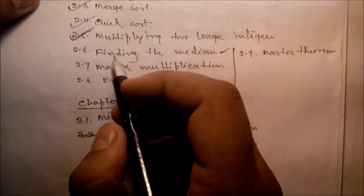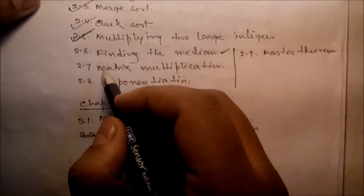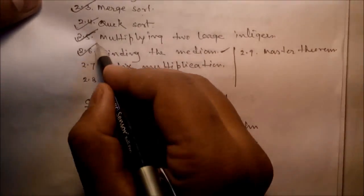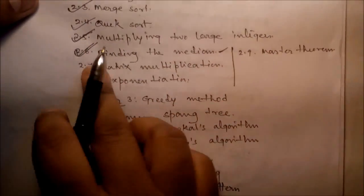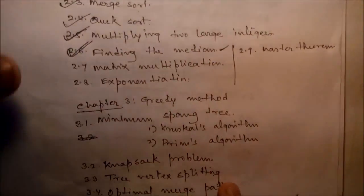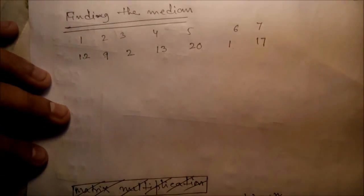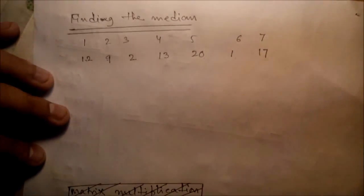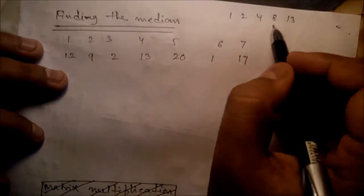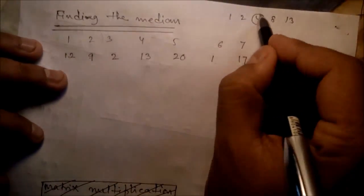Next we'll talk about finding the median — a very simple yet very effective concept. What is a median? Suppose you have data: 1, 2, 4, 8, 13. The middle value is the median value.